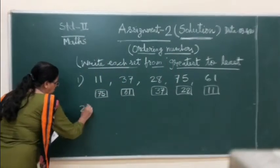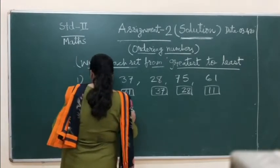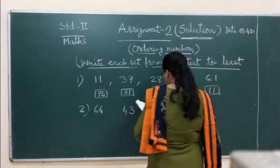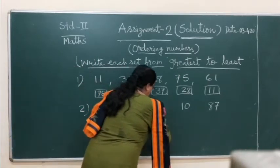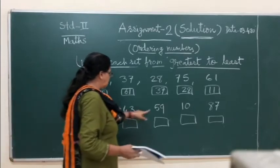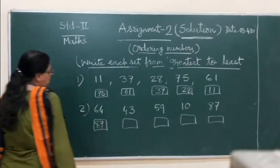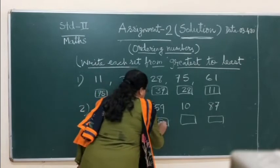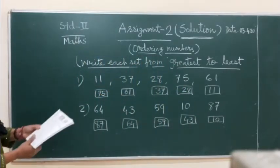Take the example of number 2, that is 64, 43, 59, 10, 87. So here first is 6, 4, 5, 1, 8. The greatest one is 8, so 87 first, then 64, then 59, then 43, then 10. Same way we will do the next also.